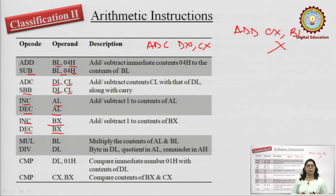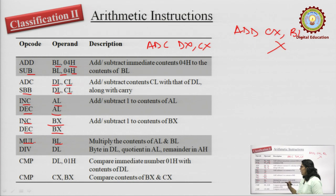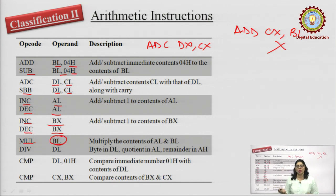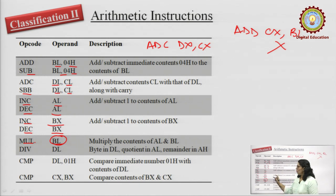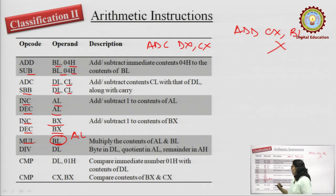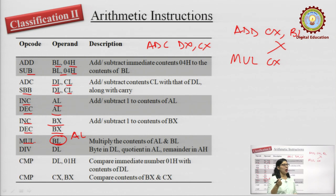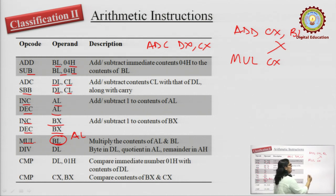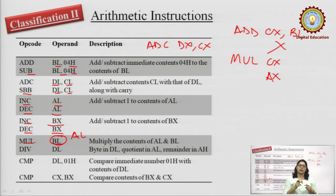We also have instructions for multiplication and division. MUL BL — for multiplication we need at least two numbers, but only one register is mentioned here. The second operand is by default the accumulator. If working with BL (an 8-bit number), the accumulator considered will be AL, the 8-bit accumulator. If I write MUL CX, then multiplication happens between the 16-bit number in CX and the second number taken from AX, the 16-bit accumulator. By default, the second register is the 16-bit accumulator AX.